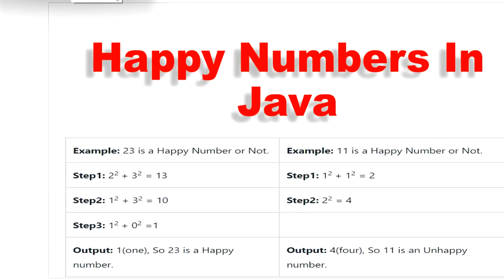A number is called happy if it leads to 1 after a sequence of steps, wherein each step the number is replaced by the sum of squares of its digits. If we start with a happy number and keep replacing it with the sum of squares of digits, we reach 1. If we reach 4, then we can say it is an unhappy number.